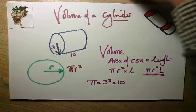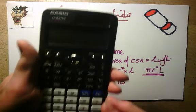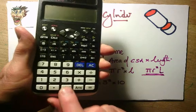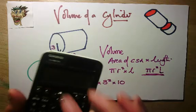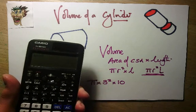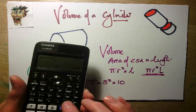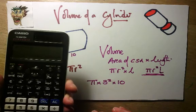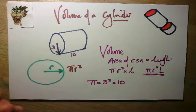Use my calculator. I've got a pi button here as well, so I can use that. I do shift pi, then multiply by 3 squared, times 10, equals. And I get 90 pi, or 282.7.